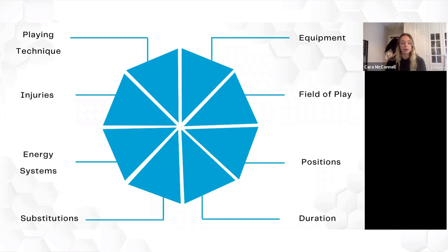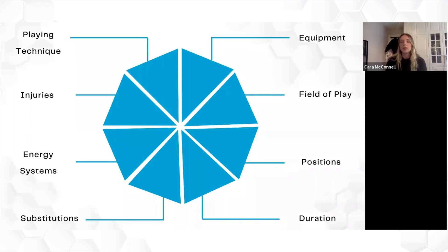Starting off very basic: do the players use any equipment? Do they wear protective padding? Do they use a hockey stick or a tennis racket? Do they need a gum shield? Then I'd look at the field of play — what type of surface they play on, whether there's more than one type of surface, and how this could potentially affect their performance. I'd also look at the size of the field of play and how it's divided — is it into halves, quarters — and what the actual field of play looks like.